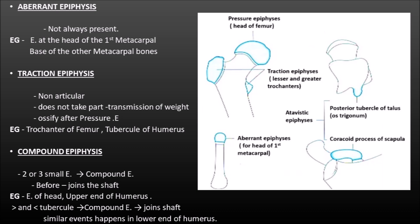Traction epiphysis is non-articular and does not take part in transmission of weight. It provides attachment to one or more tendons which exert traction on the epiphysis, and it ossifies later than the pressure epiphysis. Examples are the trochanter of femur and the tubercle of the humerus. Compound epiphysis: two or three smaller epiphyses join to form a compound epiphysis before joining the shaft. Examples are the upper end of humerus — the head, greater and lesser tubercle form the compound epiphysis — and similarly the lower end of the humerus.